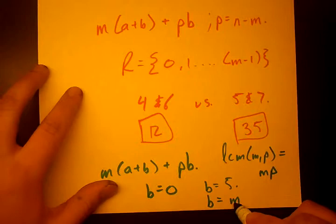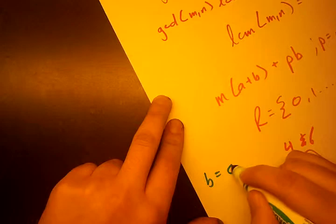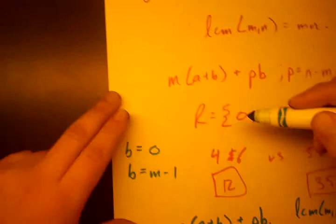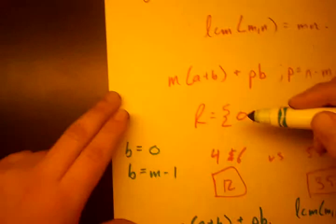So the last number we do every time remember is M minus 1. So we go from B equals 0 to B equals M minus 1. Because when B equals M, then we get the same remainder as 0. So we always stop at M minus 1. How many numbers have we hit? M numbers, right?